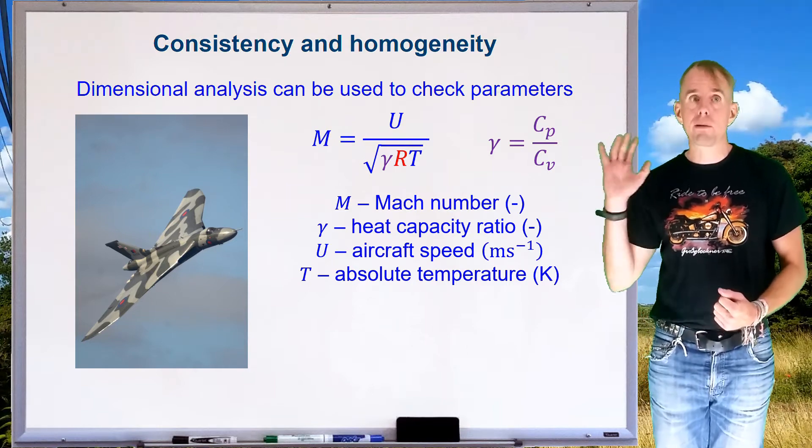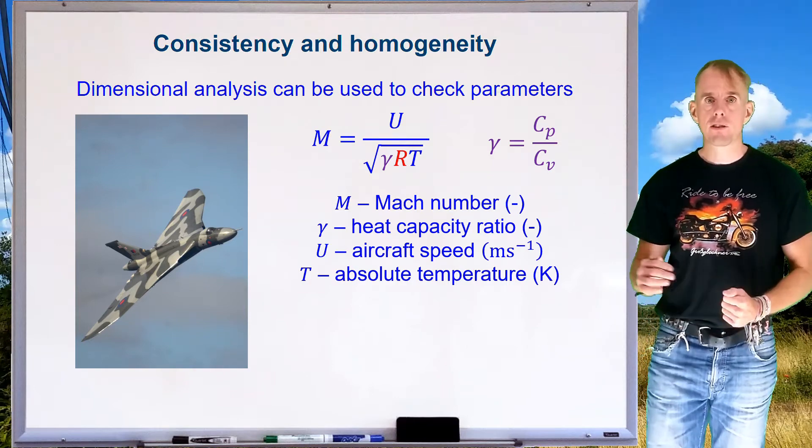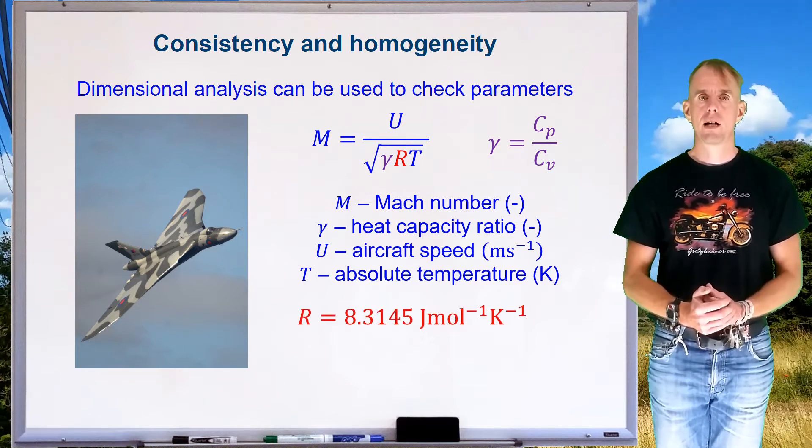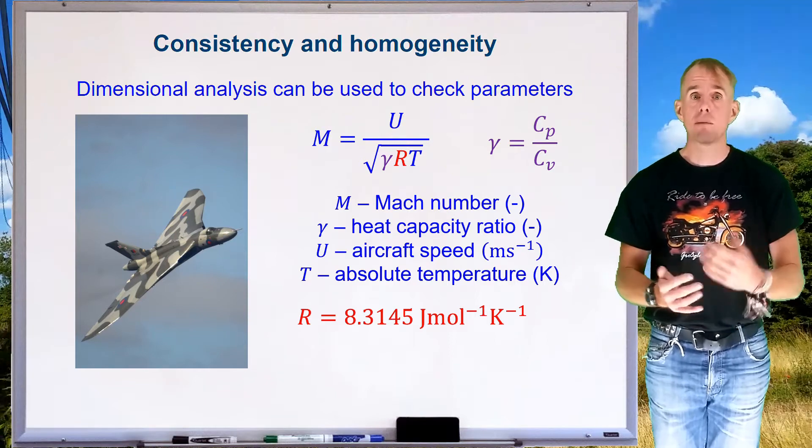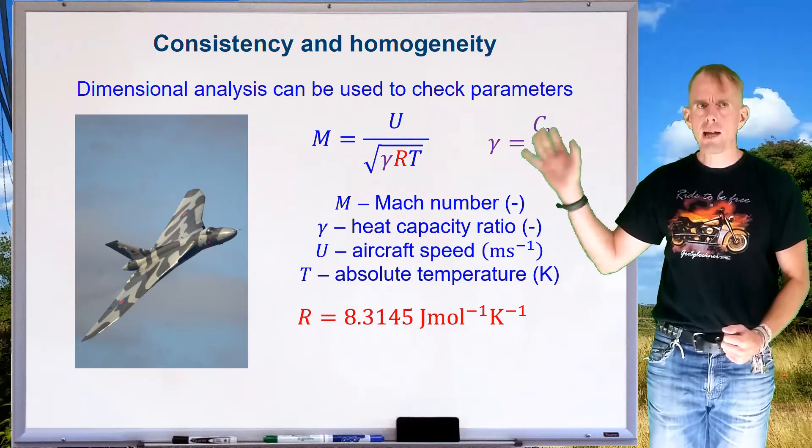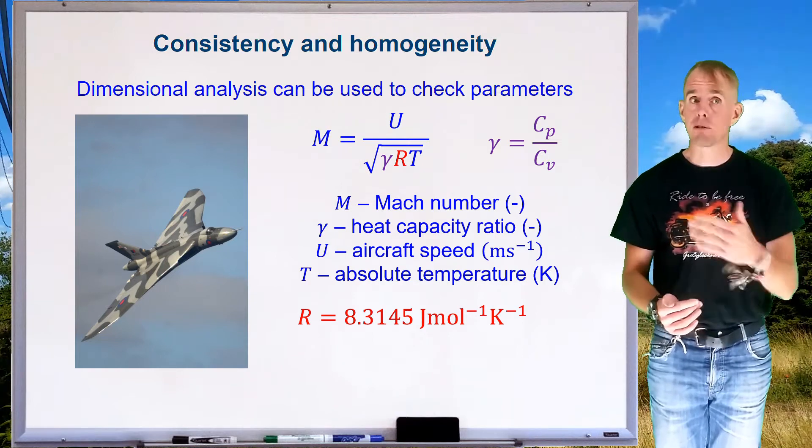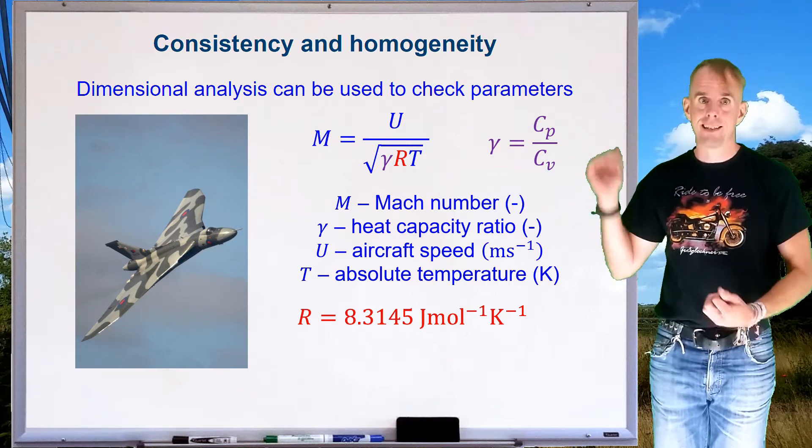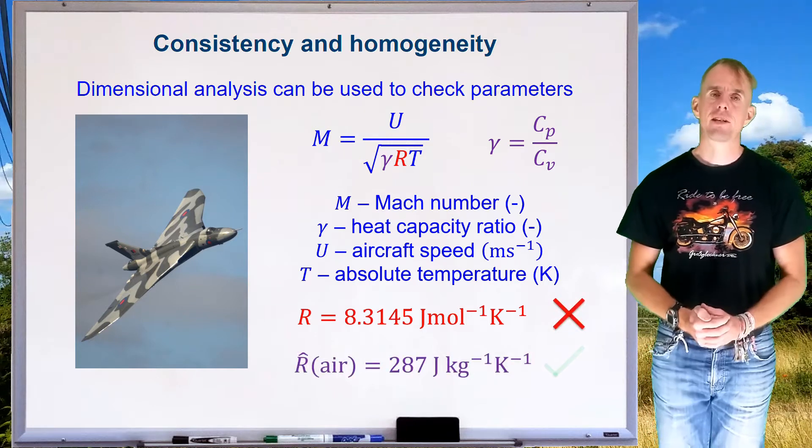So let's see what numbers we have to put into that equation, root gamma RT, to get us a speed of sound. So let's think of our gas constant, R, 8.3145 joules per mole Kelvin. And let's look at all the other parameters. Gamma is the quotient of two heat capacities. So gamma is dimensionless. T is in Kelvin. U is in metres per second. Where on the right-hand side of that equation can you see anything else involving moles? Because moles have to cancel out, because M, the Mach number, is dimensionless. The answer is, of course, there aren't any other quantities involving moles. And so this is the wrong R to use.